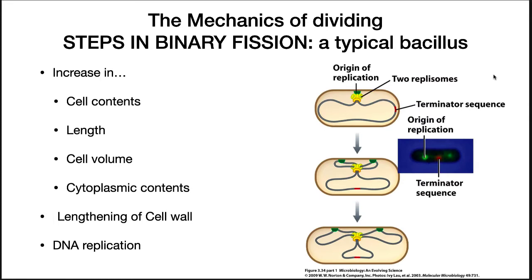Cells that divide by binary fission go through a series of steps. First, there is an increase in cell content and volume. Two cells are going to need twice as many elements, monomers, and proteins, etc. These take up more volume. Thus, the cell expands — this expansion manifests as the lengthening of the cell and an increase in macromolecules.